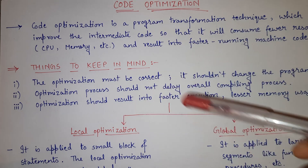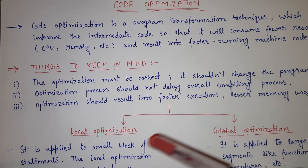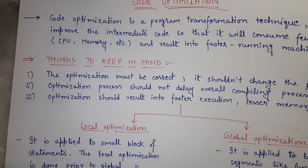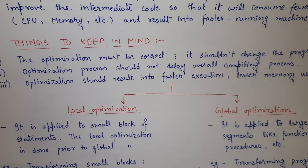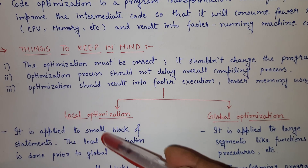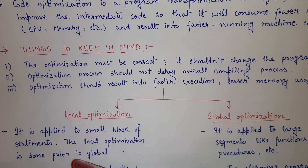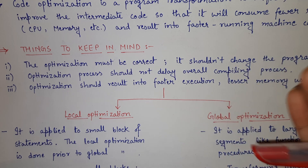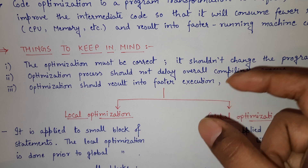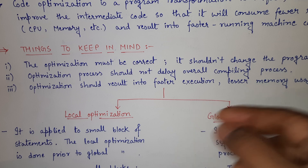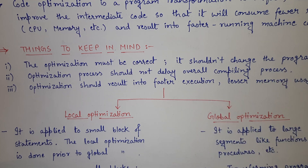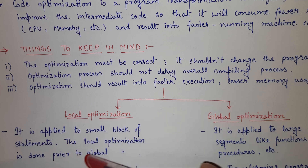If we broadly categorize code optimization, the two broad categories are local optimization and global optimization. Local optimization is applied to a small block of statements, and it is done prior to global optimization. For example, if you have 100 lines of code, instead of applying optimization to all 100 lines at once, you can take blocks of five lines and apply local optimization to those. So local optimization is applied to small small blocks of statements.